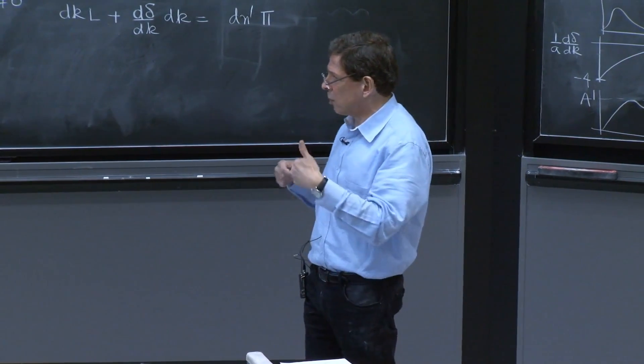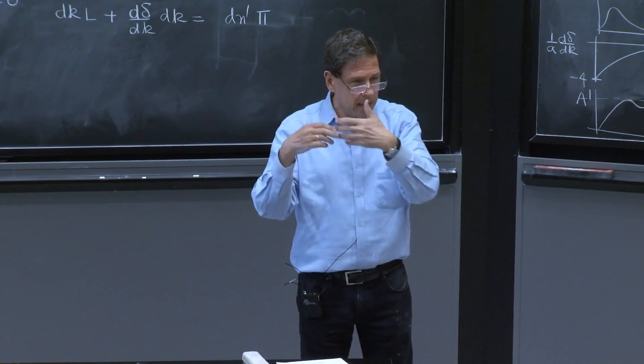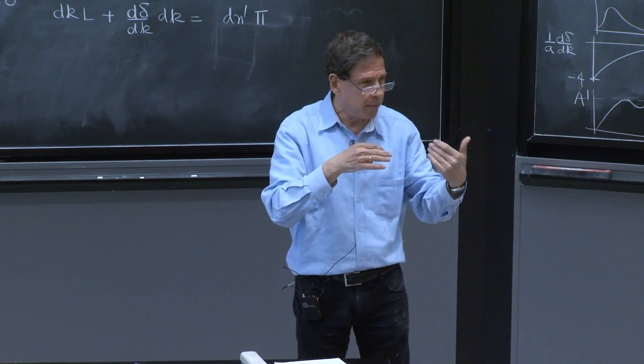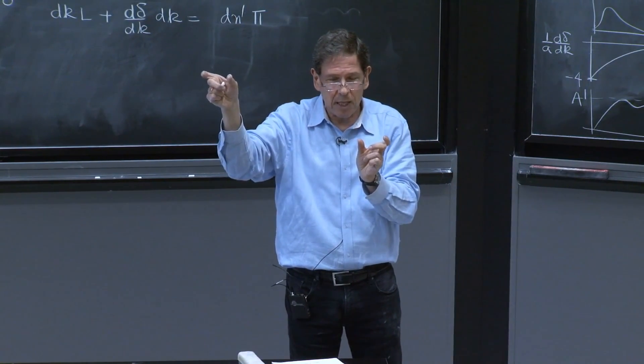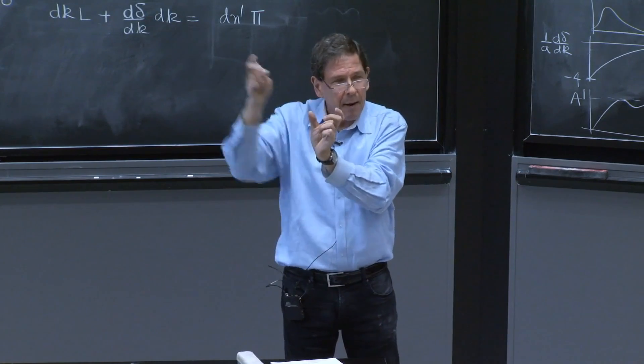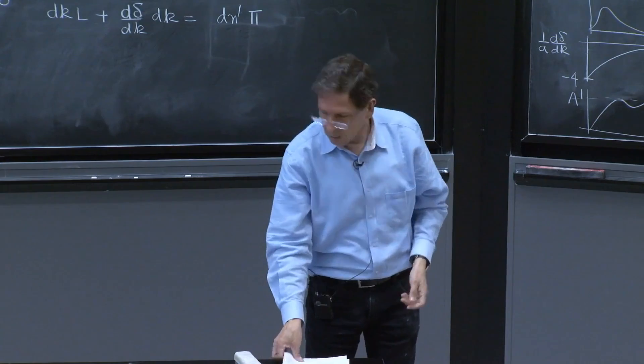So if, for example, dn is bigger than dn prime, dn equal 5 and dn prime is equal to 3, I started with five positive energy states in this little interval. And by the time I change the potential, I ended up with 3. So I lost 2.